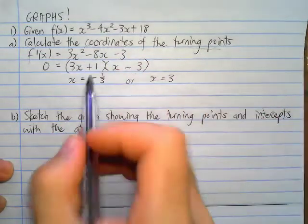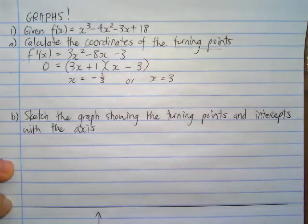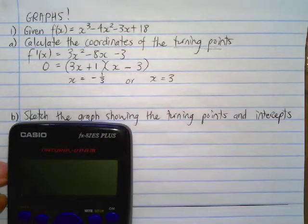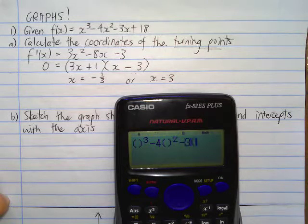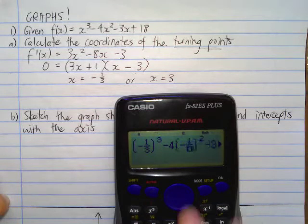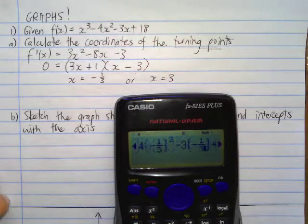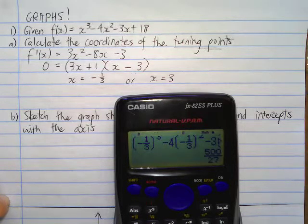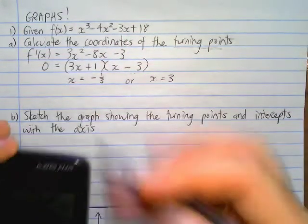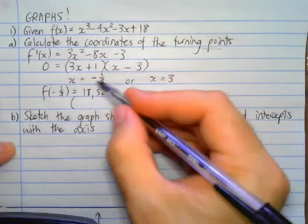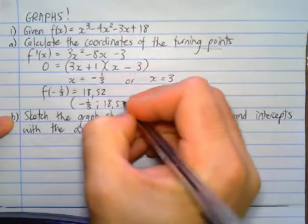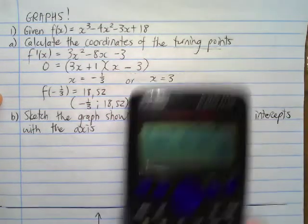To get the coordinates of the turning points, we substitute x = −1/3 and x = 3 into our original function. Setting up substitution brackets: I substitute in negative one-third into x cubed minus 4x squared minus 3x plus 18, and I get 500/27, or approximately 18.52. So f(−1/3) gives the turning point (−1/3, 18.52). You're welcome to use 500/27 if you'd like.